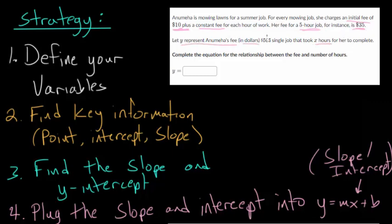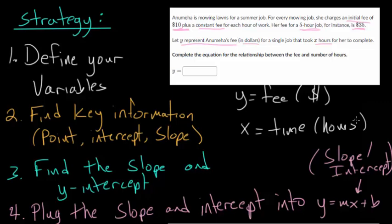So y represents the fee, and x represents time. So let's write that down, and let's say right here, so y is the fee. And I'm going to mark the units in parentheses. x is the time. And again, the units of hours will just go in parentheses, just to remind myself. Now, we have our variables defined. We know what y and x represent.